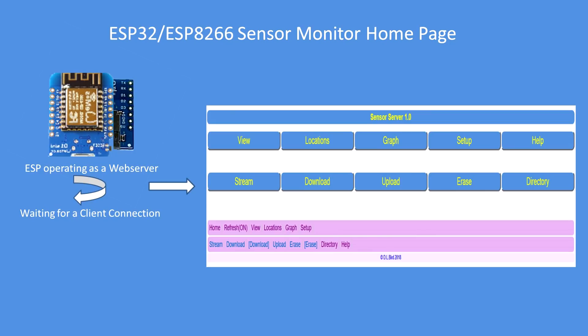The home page has a series of buttons — you can call functions by button or by the menu at the bottom. Some functions are only available on the bottom menu. For example, 'Erase' with square brackets is what I call an open erase, meaning you can erase any file on the SD card. Similarly, Download can be by channel or any file, and Upload is open — you can upload any file to the SD card.